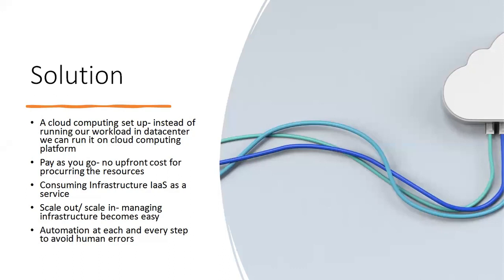The solution to this problem is to have a cloud computing setup. Instead of running our workload in the data center, we run it on a cloud computing platform where we don't pay upfront for resources — we pay as we go. Consuming infrastructure as a service, just like electricity, gives us flexibility. It's elastic in nature — we can easily scale in and scale out and really control our cost. Managing infrastructure becomes easier, and most importantly, we can automate each and every step to avoid human errors and save time.